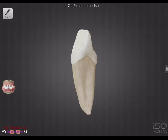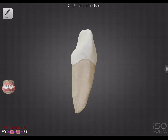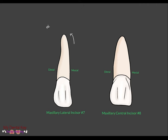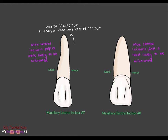The maxillary lateral incisor has one root and typically contains a single pulp chamber with three pulp horns. The root has a distal inclination and it's a bit sharper than the central. The maxillary laterals are also more likely to be bifurcated than the maxillary central incisors.